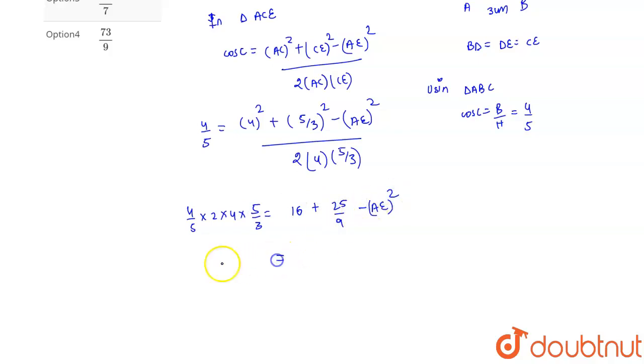Now in left hand side here, 5 by 5 will cancel out each other and 4 into 4 into 2 gives 32 divided by 3. And here in right hand side on taking LCM that is 9, it is given as 16 into 9 plus 25 minus AE whole square.